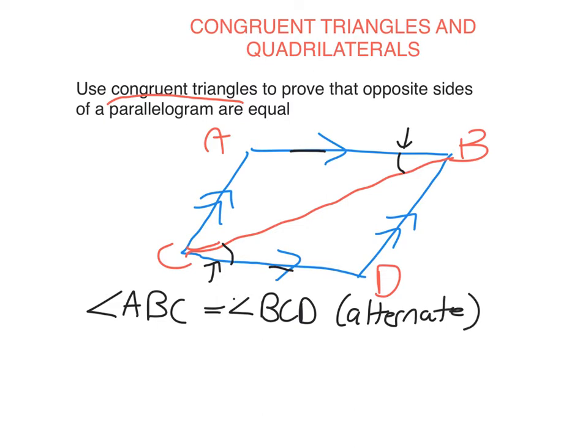But remember, I've also got this side and this side being parallel. So that means that this angle here, which I'll mark with an X, and this angle here, they must also be equal. And again, that's because of alternate angles. So this angle here, I'll call angle ACB, that is equal to this angle here, which I will call angle CBD. The reason, again, is alternate.